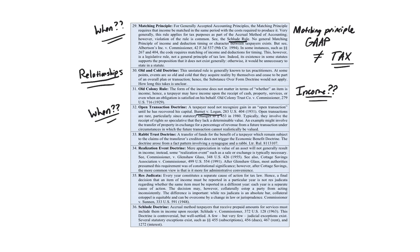The rabbi trust doctrine actually comes from a letter ruling. A transfer of funds for the benefit of a taxpayer, which remains subject to claims of the transferor's creditors, does not trigger the economic benefit doctrine. The doctrine arose because it involved a synagogue and a rabbi — that is an income question. The realization event doctrine: mere appreciation in the value of an asset will not generally result in income. Instead, some realization event — such as a sale or exchange — is typically necessary; you could also have involuntary conversions. Cases like Glenshaw Glass and Cottage Savings are the main ones from the top 50 cases. That's also an income question.